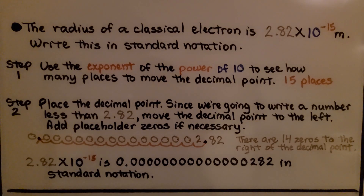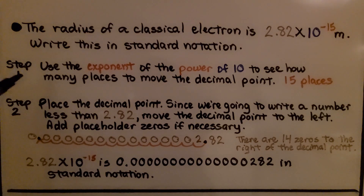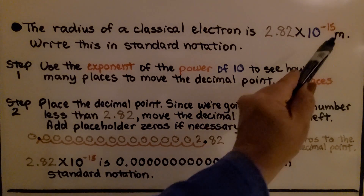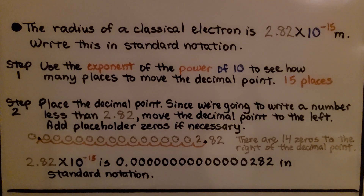The radius of a classical electron is 2 and 82 hundredths times 10 to the negative 15th meter. Write this in standard notation. Step one: we use the exponent of the power of 10 to see how many places to move the decimal point. We know it's 15 places.